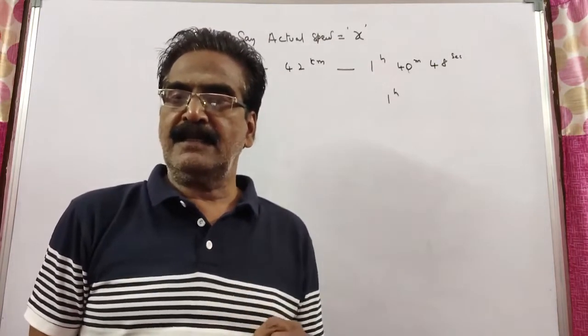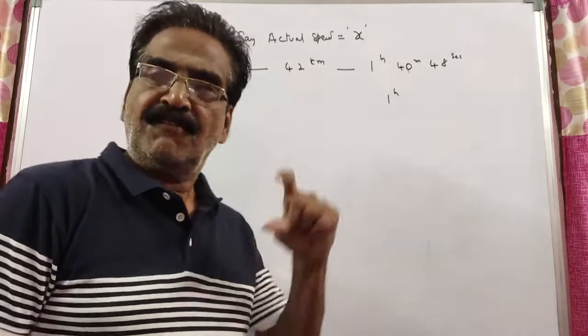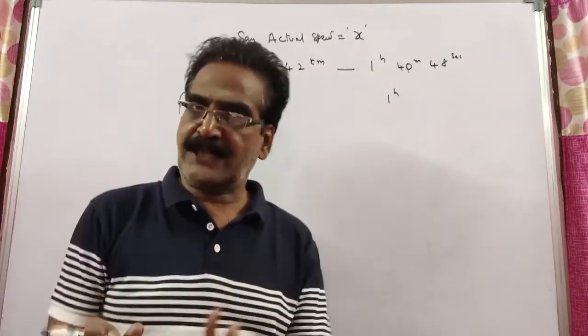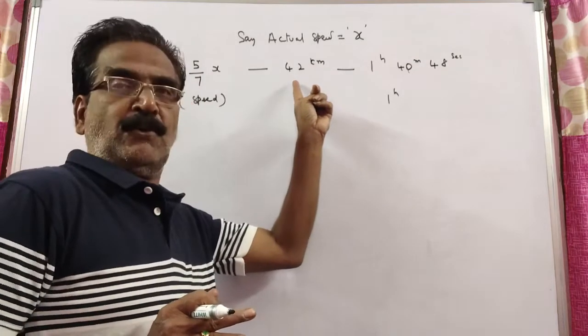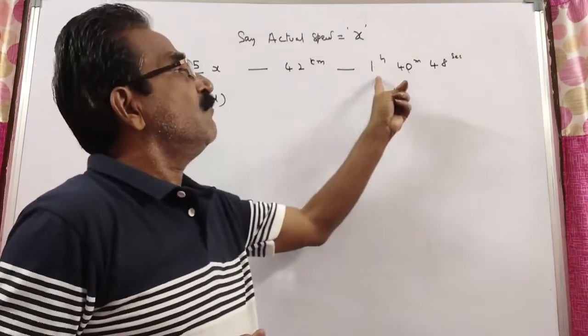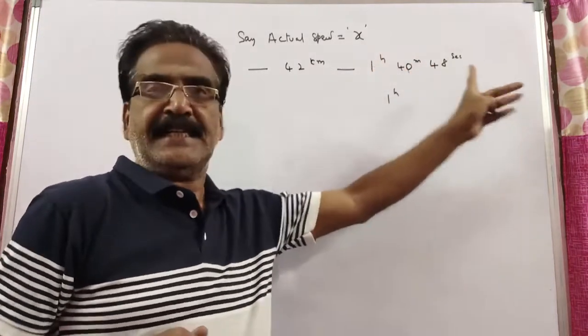If a car travelling at 5/7 of its actual speed covers 42 kilometers in 1 hour, 43 minutes and 48 seconds,